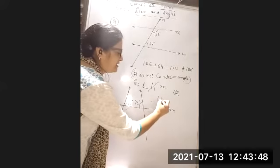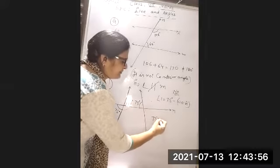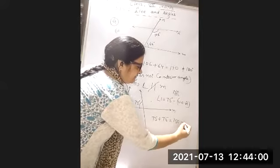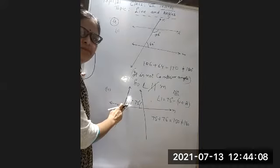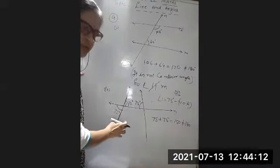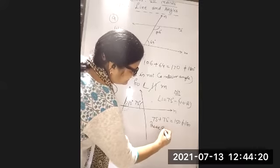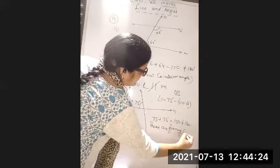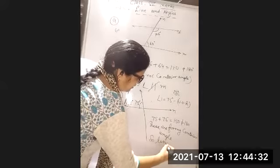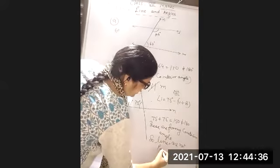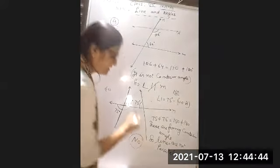So first I wrote angle 1, which is 75 degrees by vertically opposite angle. Then 75 + 75 = 150, which is not 180. These are not forming co-interior angles. So the lines are not parallel.